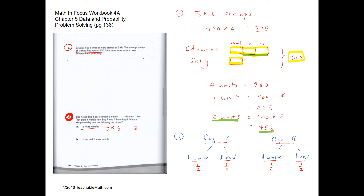Part B is slightly more tricky. To get one red and one white, there are two ways: a red from bag A and a white from bag B, or a white from bag A and a red from bag B. The probability of each combination is one-half times one-half equals one-fourth. Since either works, the total probability is one-fourth plus one-fourth, which is one-half. This question is very tricky, so it is okay to go through it a few more times.